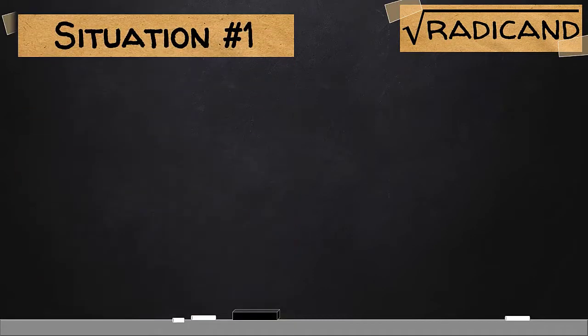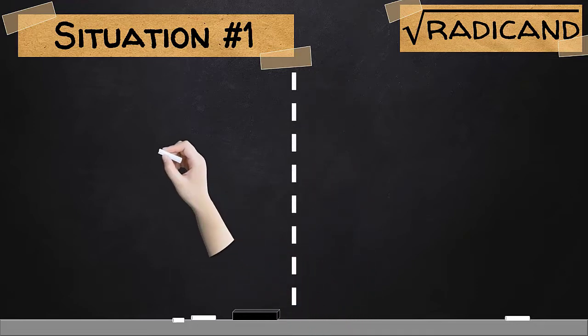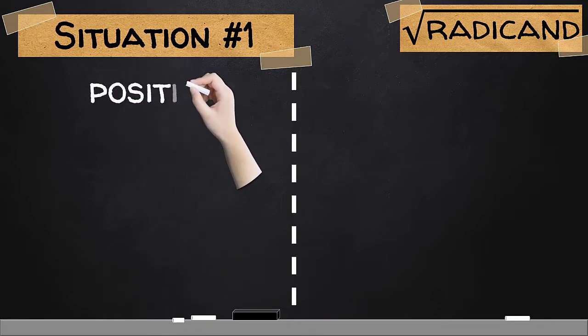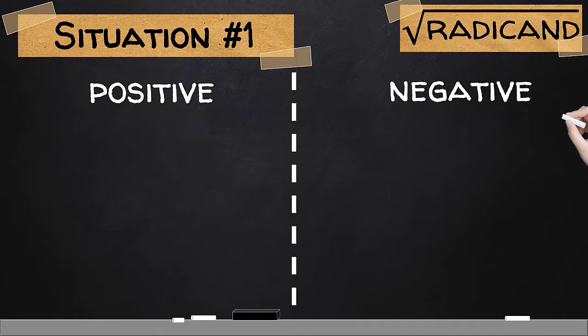Situation number 1. Let us consider two possible values for our radicand. The first is where the radicand is positive, and the second is for negative valued radicand.